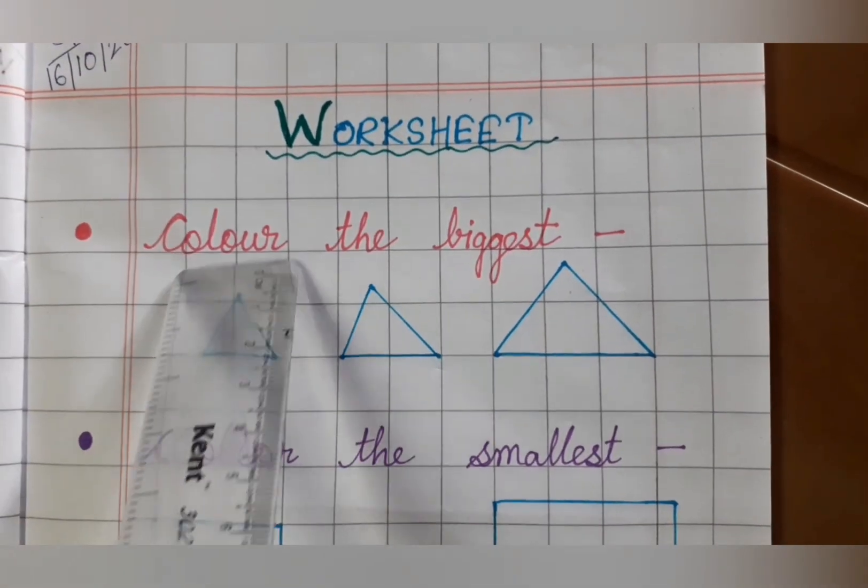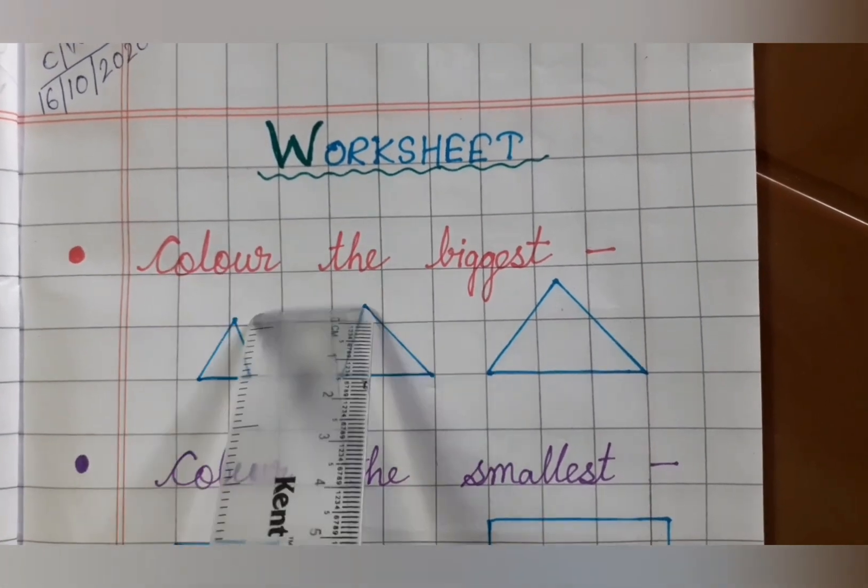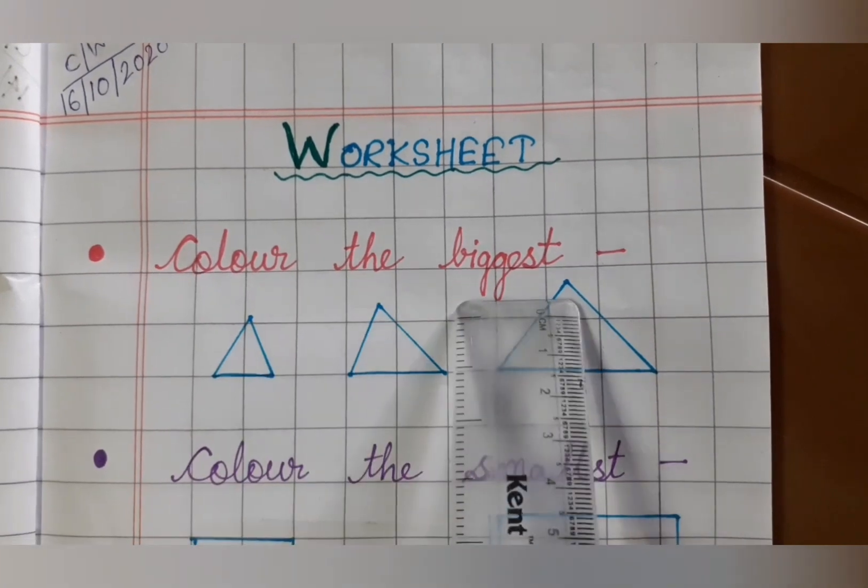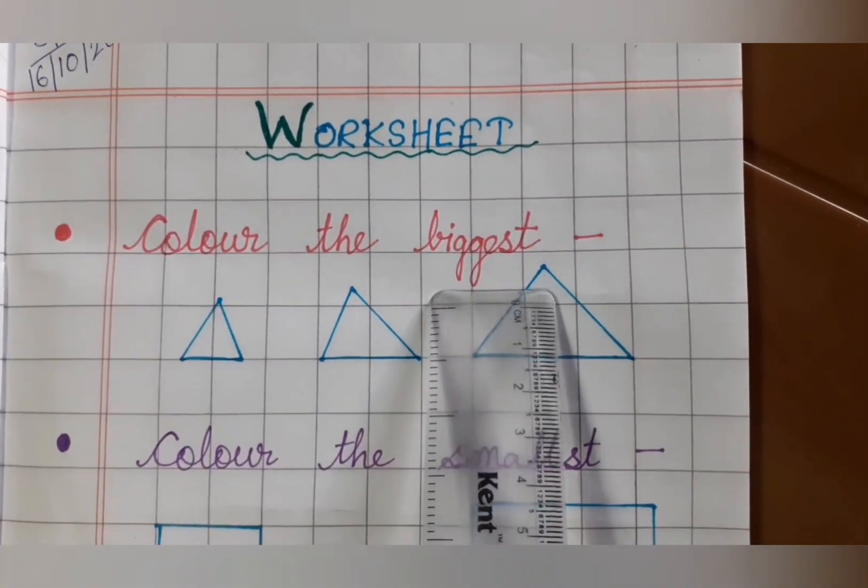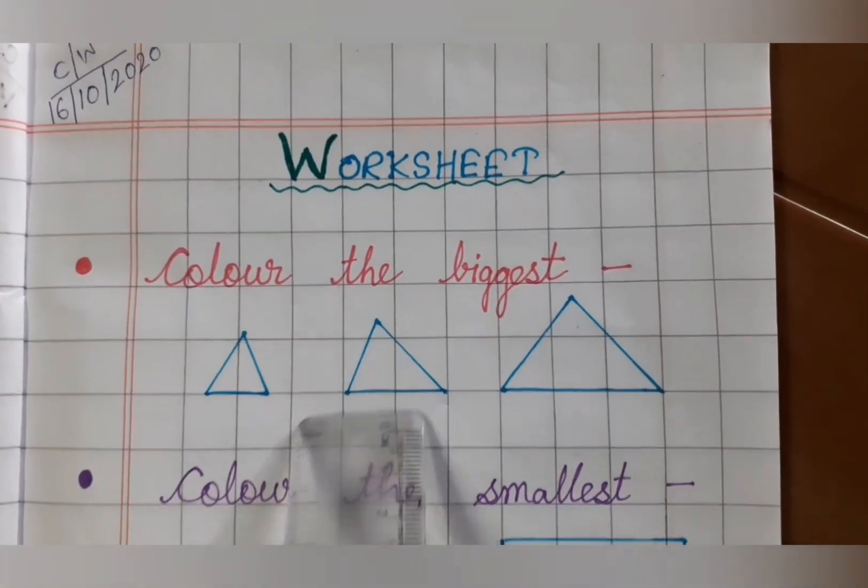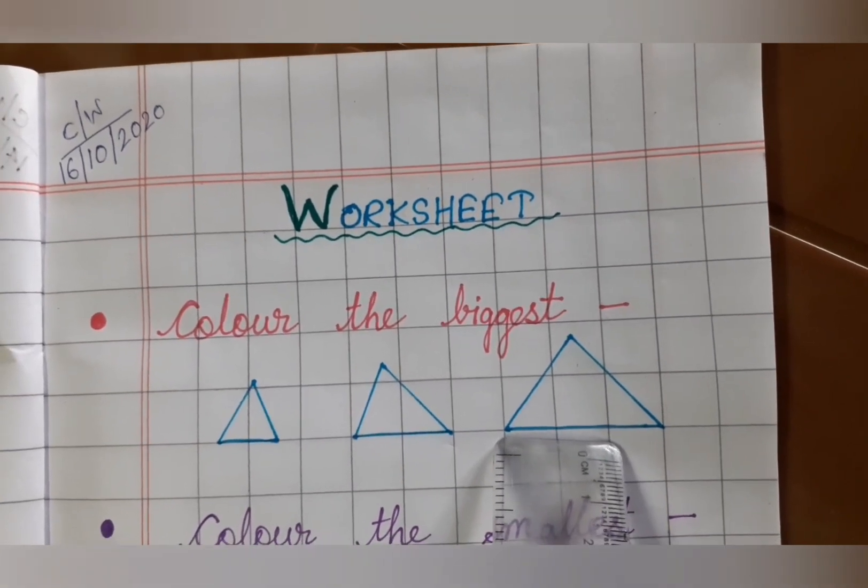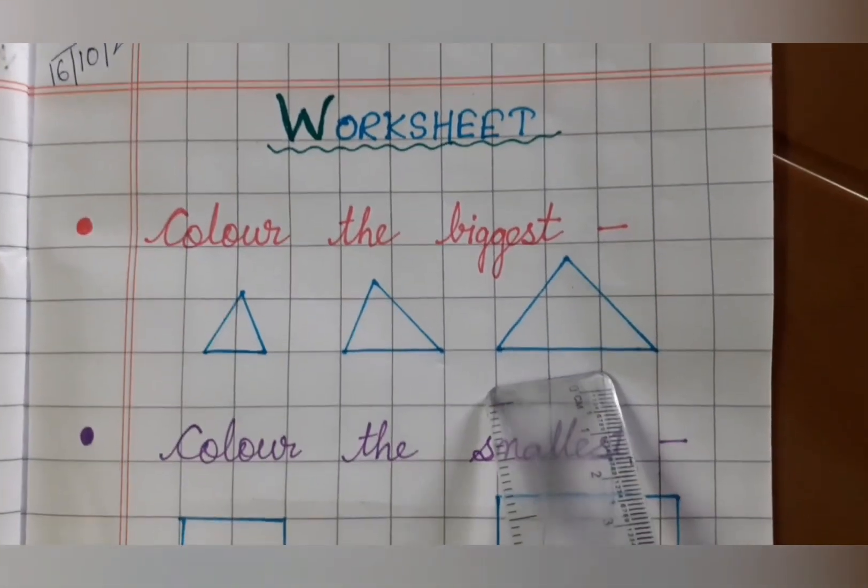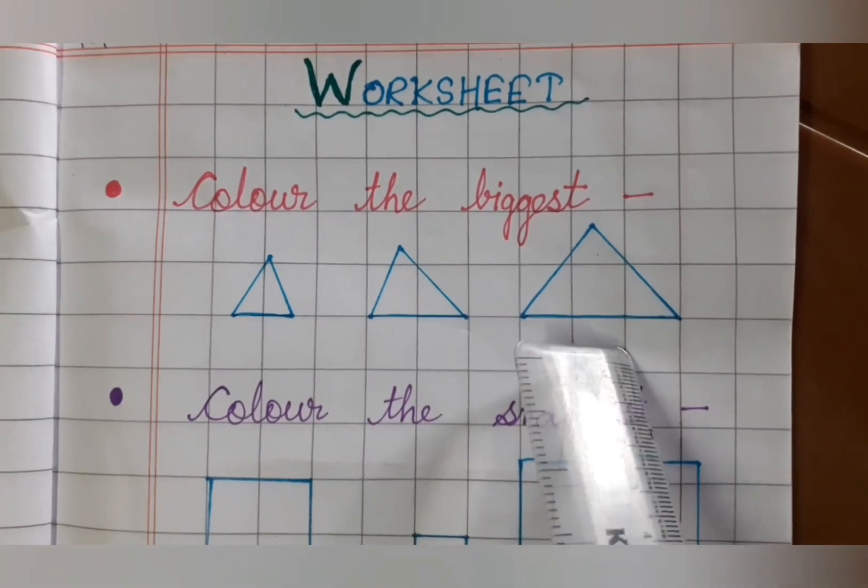So, first one, let's read. C-O-L-O-U-R, color, T-H-E, the. Color the, B-I-G-G-E-S-T, biggest. So, you have to color the biggest shape here. Which shape is this? This shape is triangle. So, you will find out the biggest triangle and color it, okay? The color is of your choice. You can do whichever color you want.